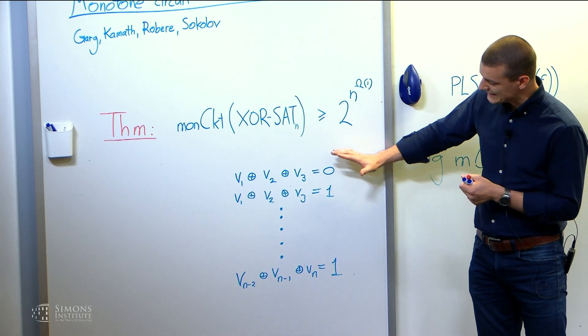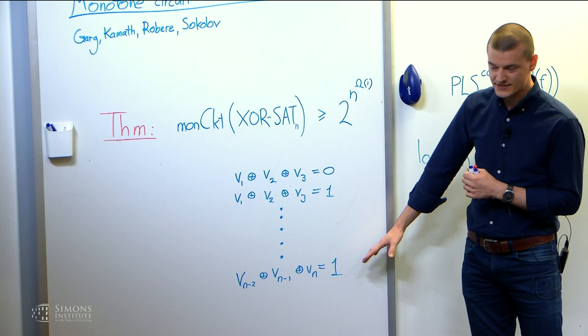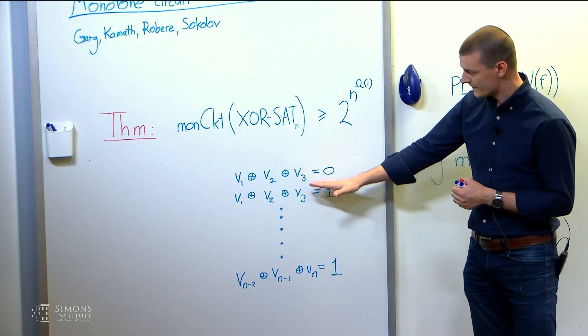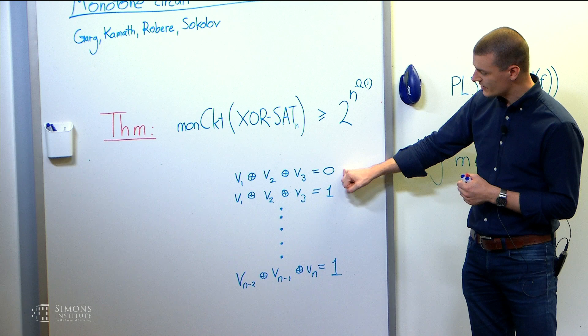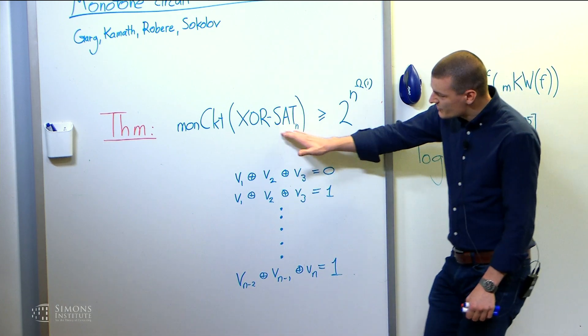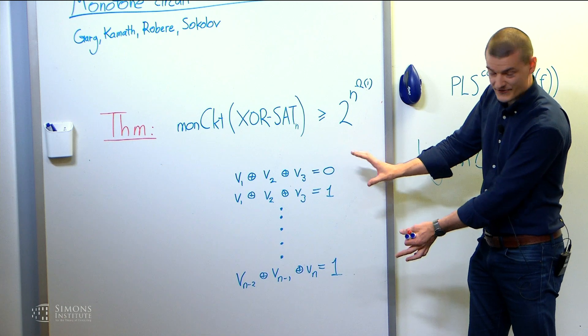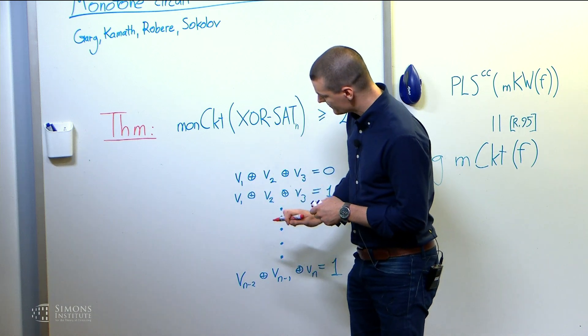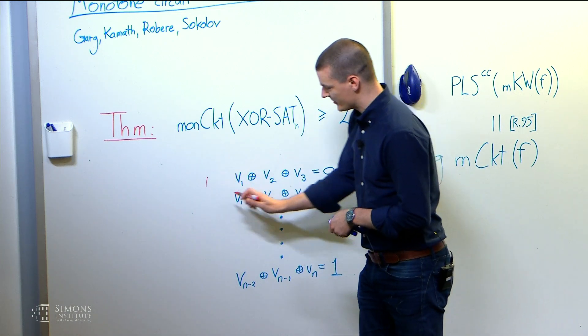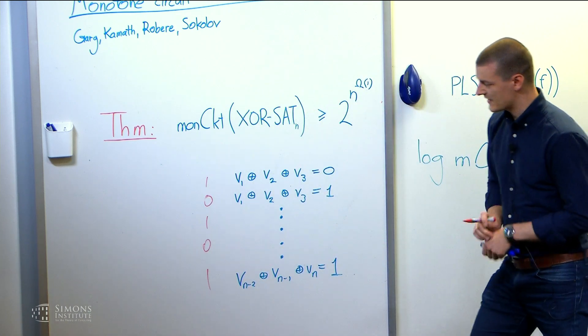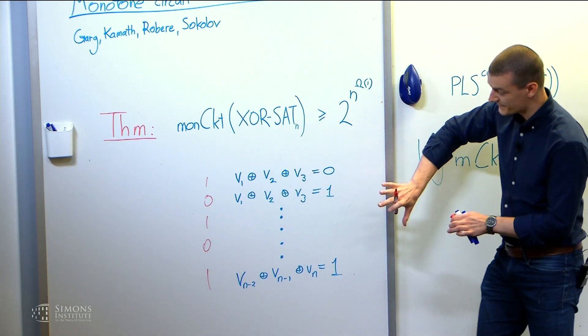So you first imagine listing all possible XOR constraints on n variables, let's say ternary XOR constraints. So for each triple of variables, you have an equation saying their parity should equal zero or one, and there are n cubed roughly many such equations. So the input to my XORSAT will be a subset of these constraints just given by an indicator vector. So the input is for each row, I pick whether I want to include this constraint in my CSP or leave it out. So something like this. That's an input to XORSAT.